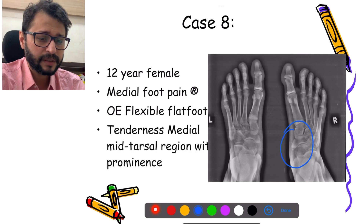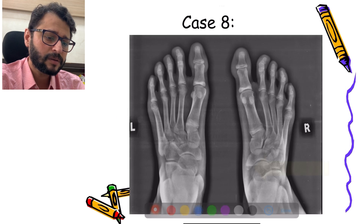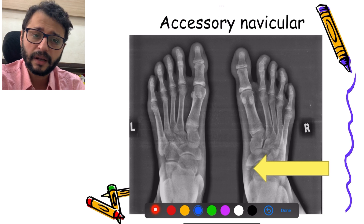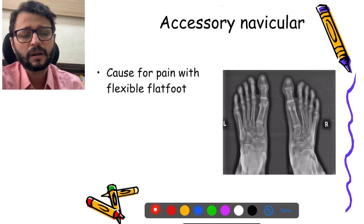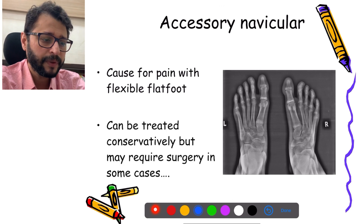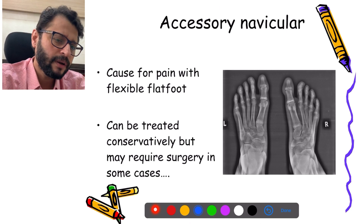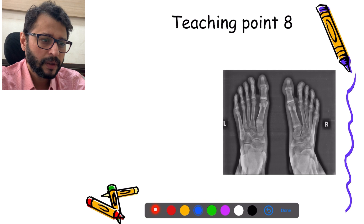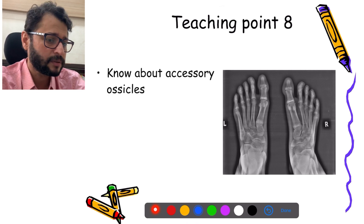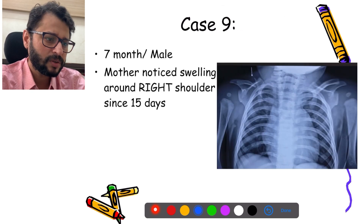Another case: a 12-year-old female with right-sided medial foot pain and flexible flat foot. There is tenderness over a bony prominence, and on x-ray there is a bone that appears to have grown — this is not a fracture of the navicular. This is an accessory navicular. These are accessory ossicles seen occasionally; they can cause mild intermittent pain but can be treated conservatively in 99.9% of cases. Very rarely do they require surgery. Know about these accessory ossicles and do not diagnose them as fractures.